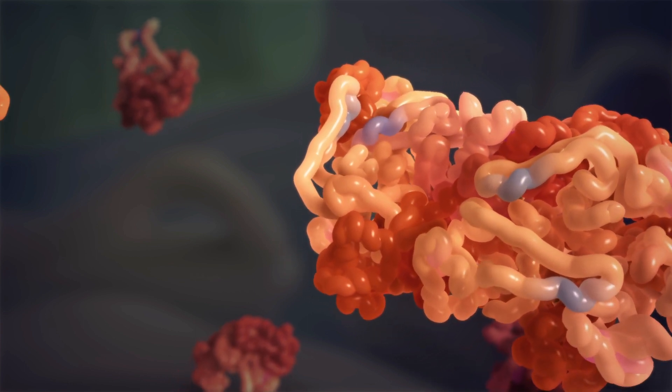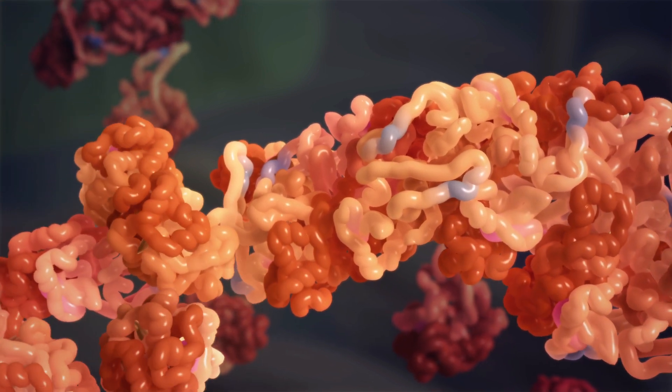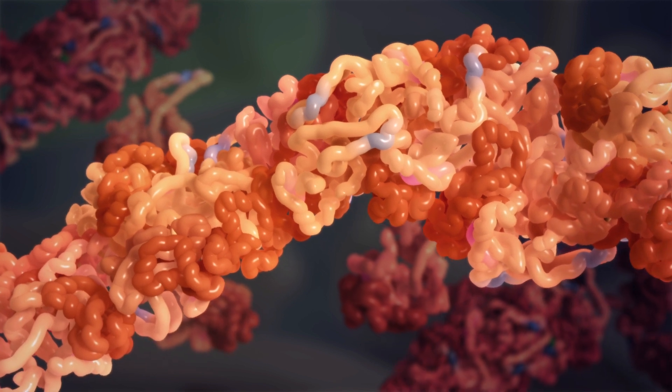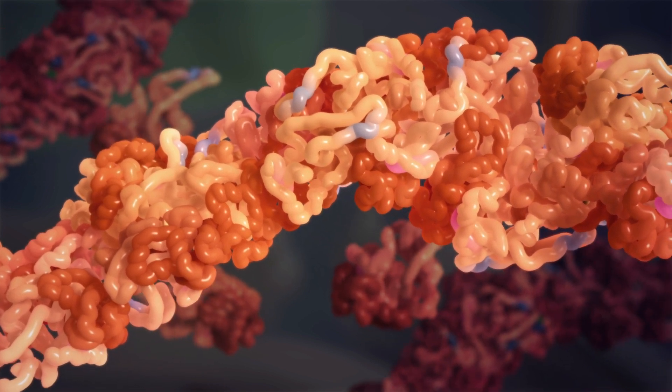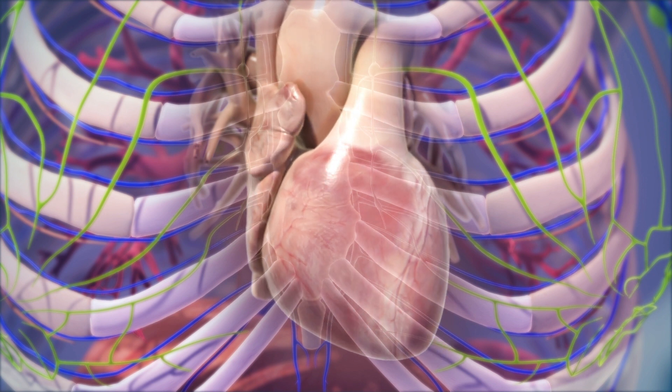Amyloidosis occurs when misfolded proteins aren't removed in the normal way. Instead, they accumulate and stick together to form long, rigid fibrils that deposit in various tissues and organs. These deposits are called amyloid and, over time, start to cause damage.